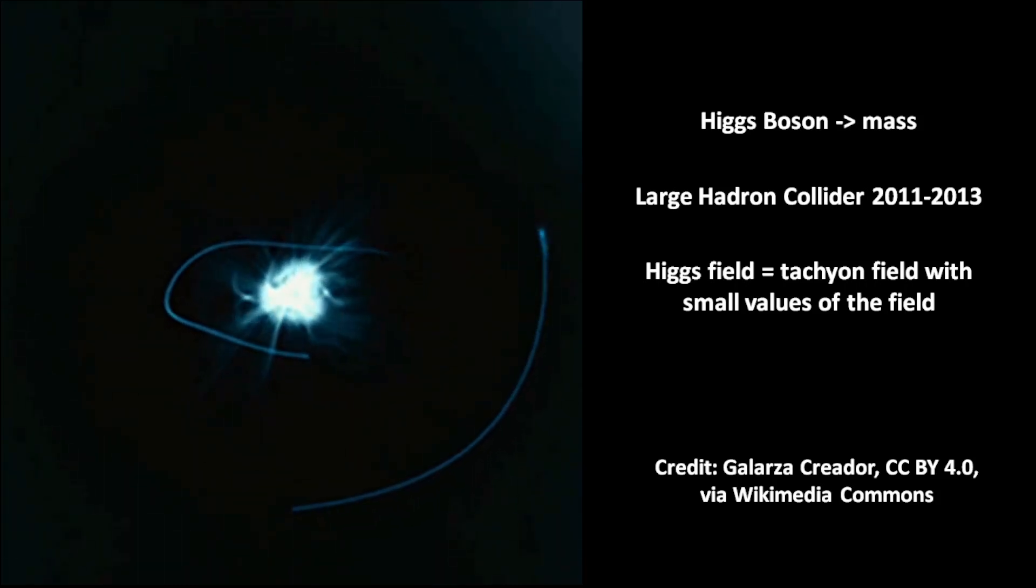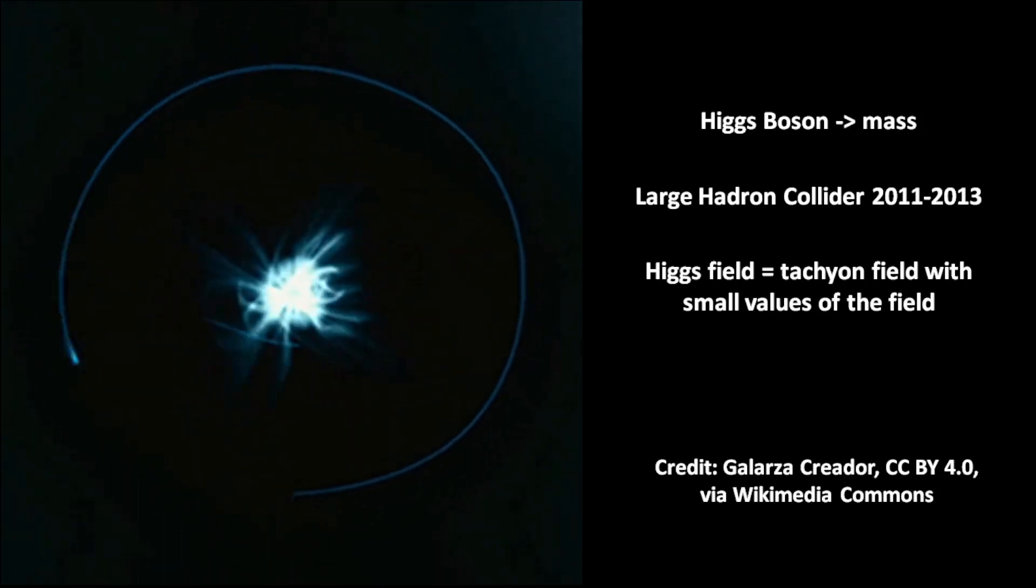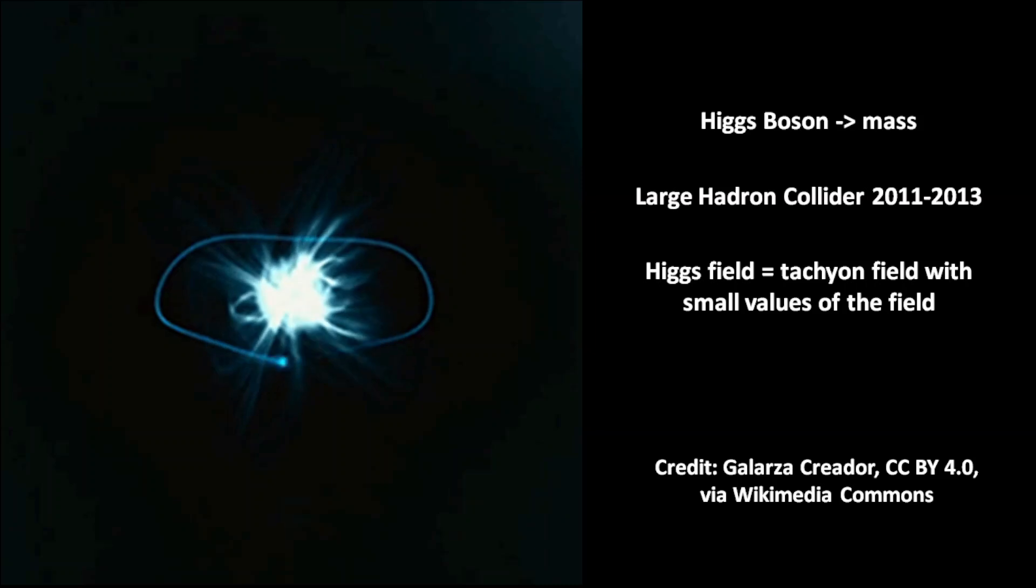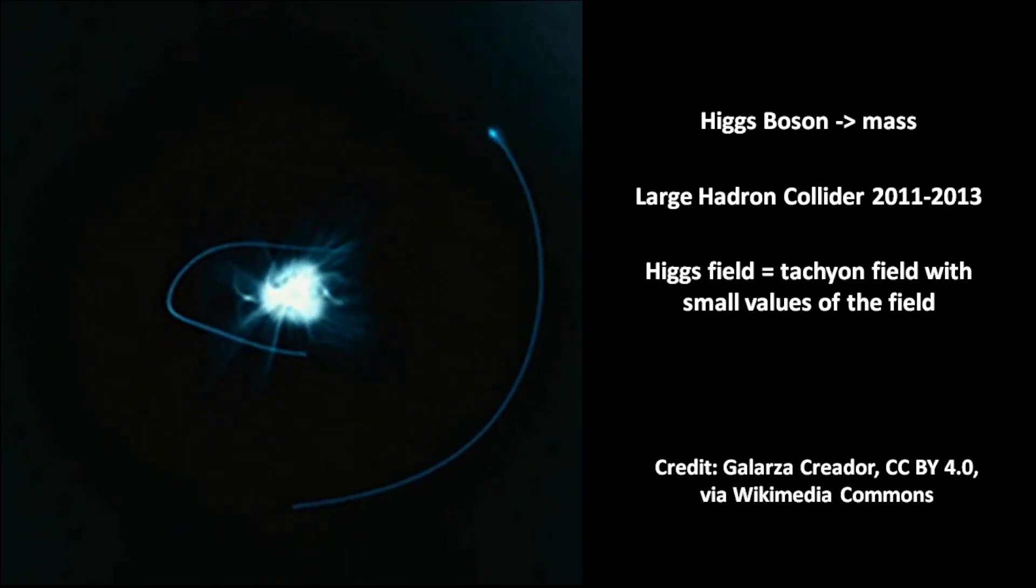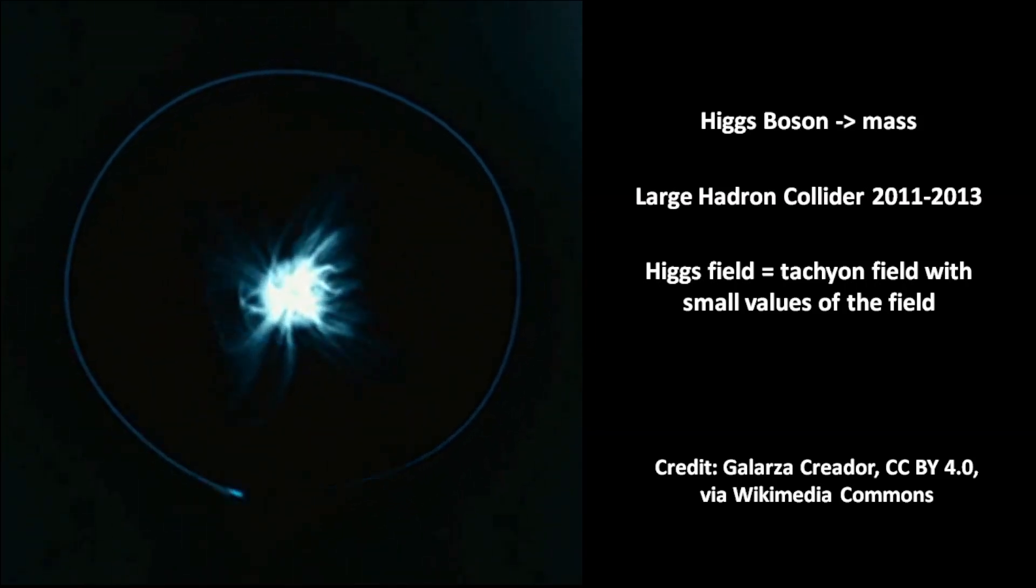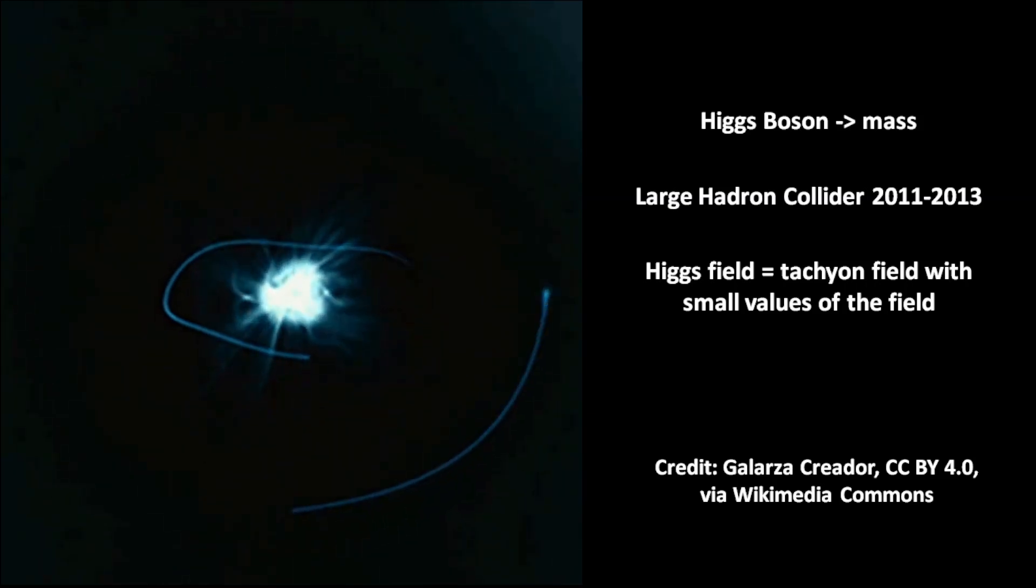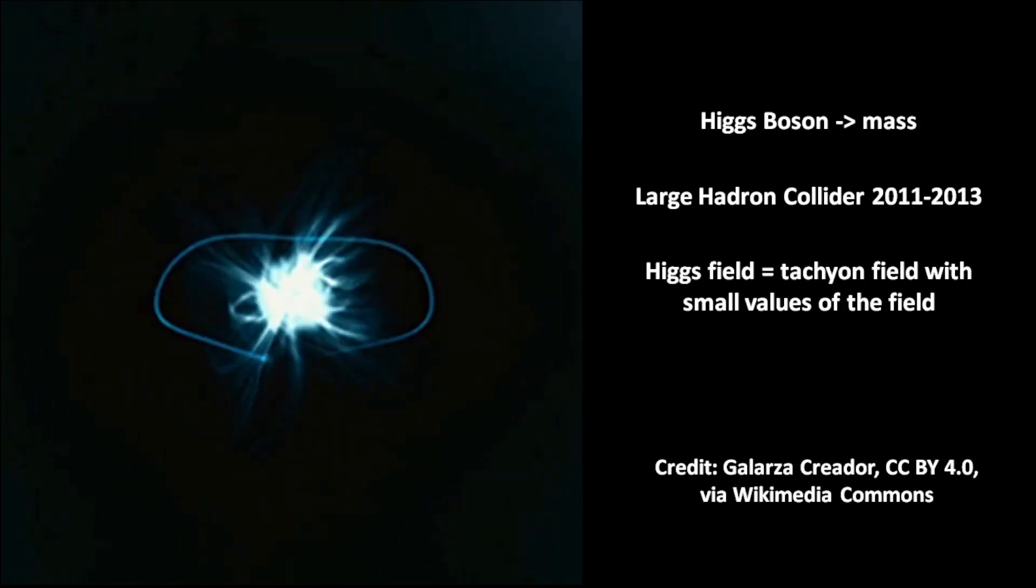The discovery of the Higgs boson with the Large Hadron Collider was a big breakthrough in physics. The Higgs field gives rest mass to all massive elementary particles of the standard model. It can formally be regarded as a tachyon field for small values of the field. A tachyonic field is expected to be quantized.